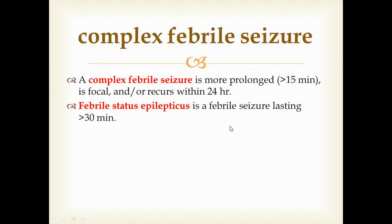The second form — complex febrile seizures — is more prolonged, lasting more than 15 minutes, and they are focal and/or recur within a 24-hour period, so multiple seizures may be present within 24 hours. There is another entity called febrile status epilepticus, which is a febrile seizure lasting for more than 30 minutes despite using conventional anti-epileptic medication.